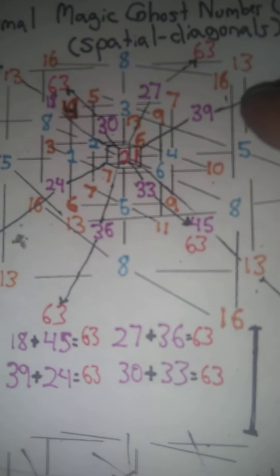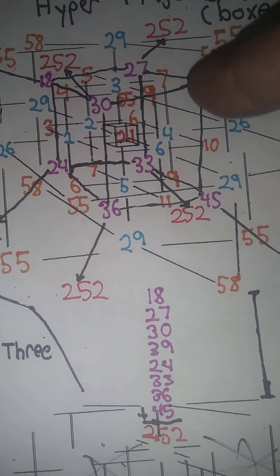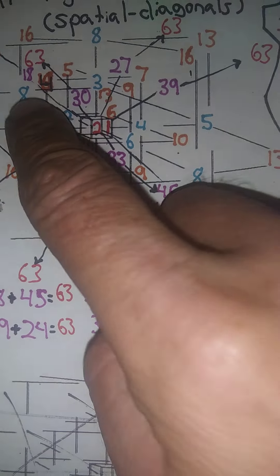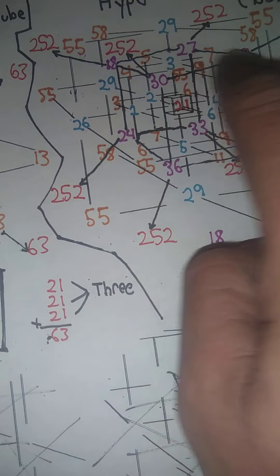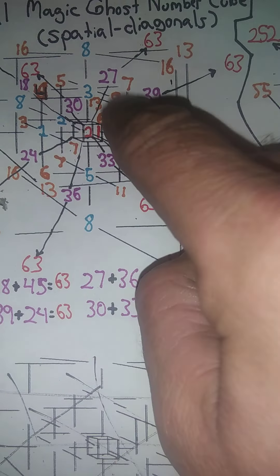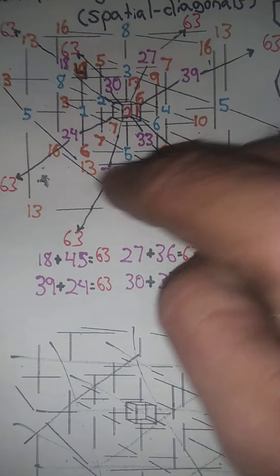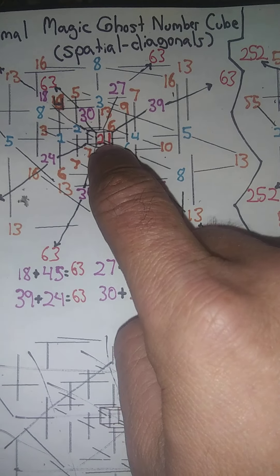The inner ghost number cube stays the same. There's nothing about the cube that's different from the hyper ghost number cube. The central cube stays the same — all the same numbers: 18, 18, 30, 27, 30, 20 — all these inner cube ghost numbers stay the same. Nothing about this changes.